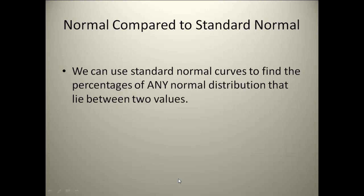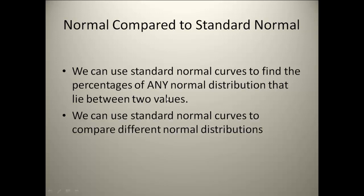We can use standard normal curves to find the percentages of any normal distribution that lies between two values, and we're going to do that using a table. One reason we standardize data sets is because once standardized, we can find the percentages between values of anything. We can also use the standard normal curves to compare different distributions to each other, because it puts them on the same scale — a level playing field with the same mean and the same standard deviation.